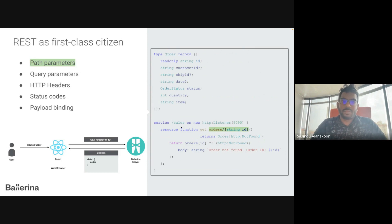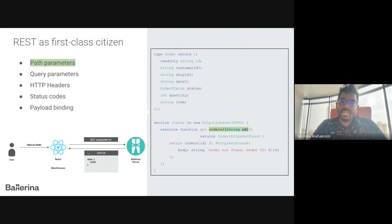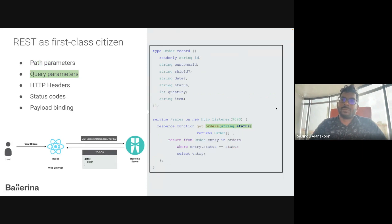Path parameters can be of type string, int, decimal, or float. In this example, the function gets the order ID as a path parameter and outputs an order with that specific ID. If there is no order with that ID, it returns the HTTP Not Found status code. This is an example of a query parameter in Ballerina's REST implementation.